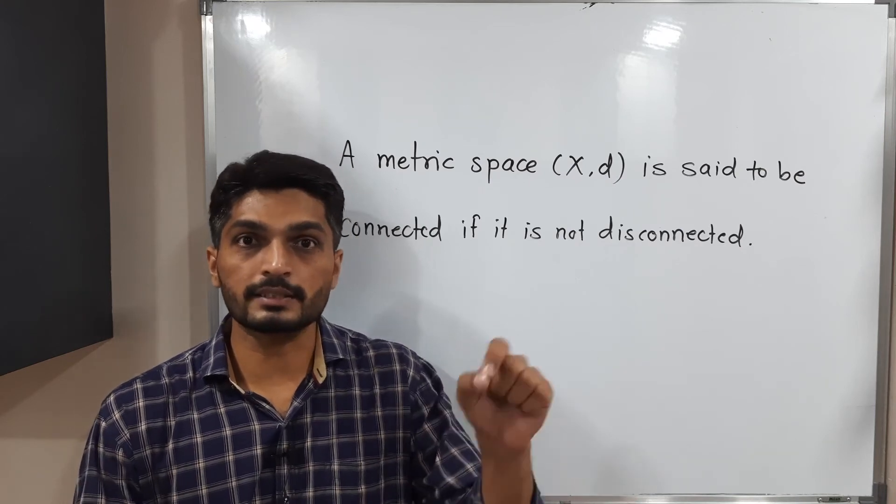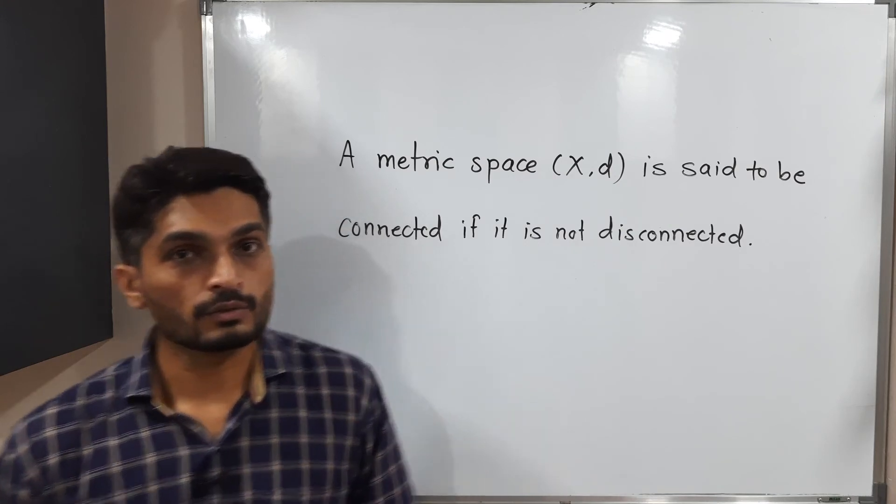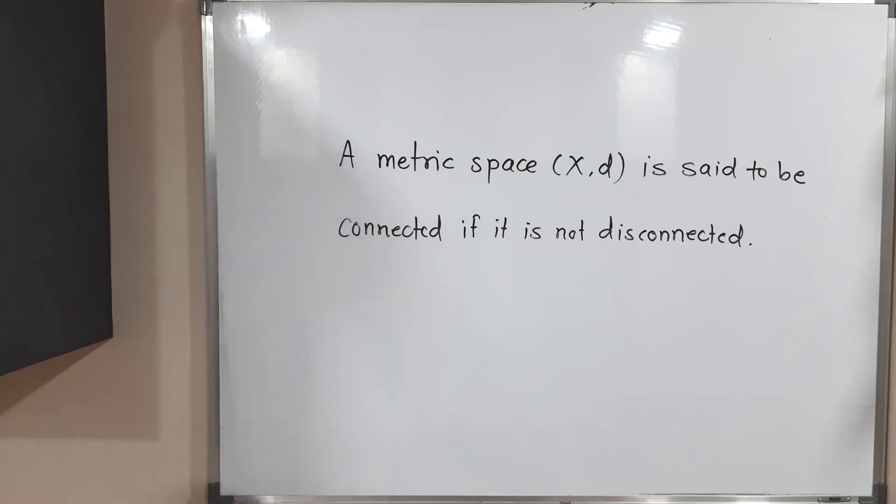such that X is equal to A union B, then we can say X is connected metric space. So this is the definition of connected metric space.